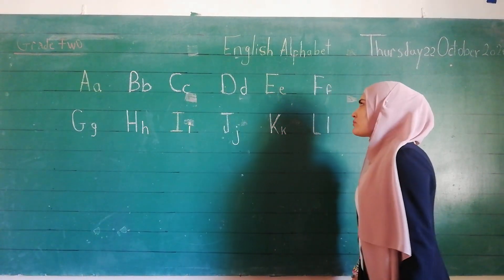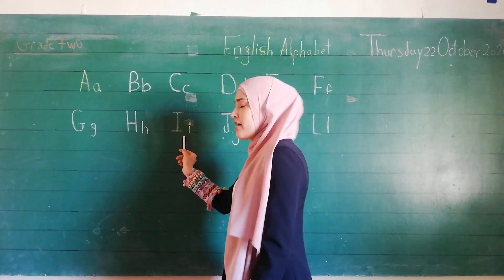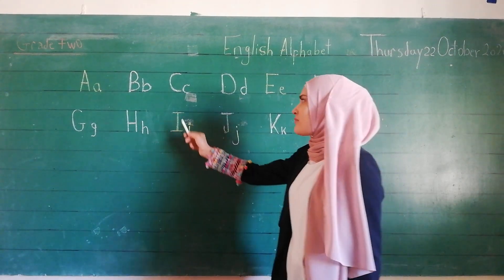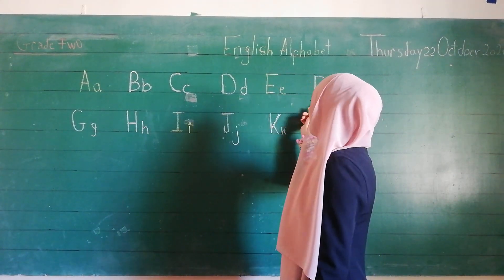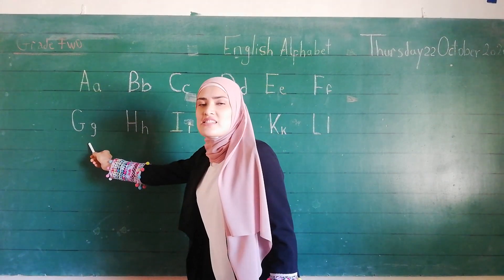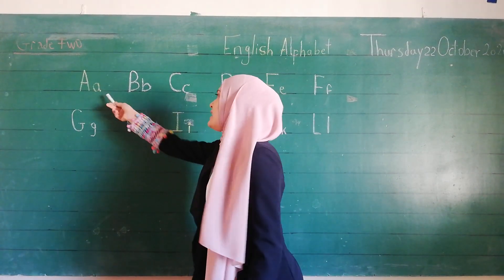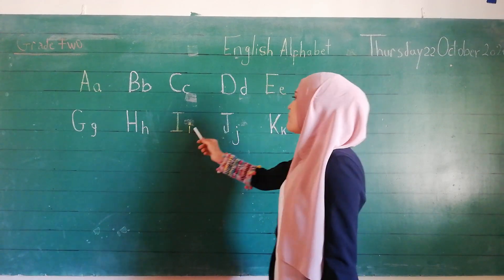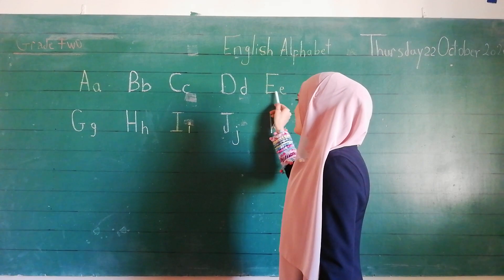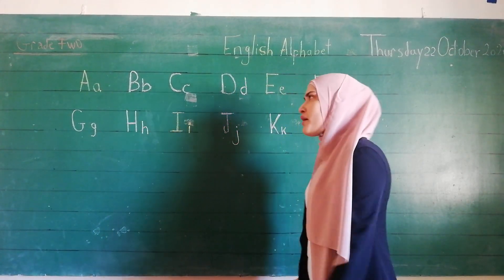So, A, E, I are vowels, and the others are consonants. Only three letters are vowels — only three. A, E, I. Awesome.